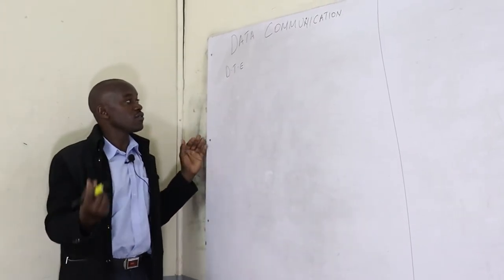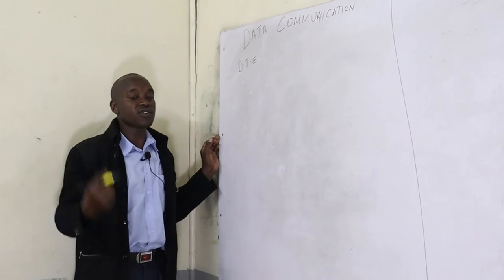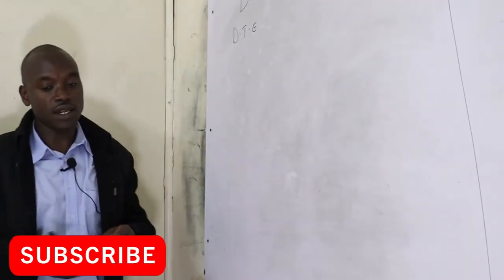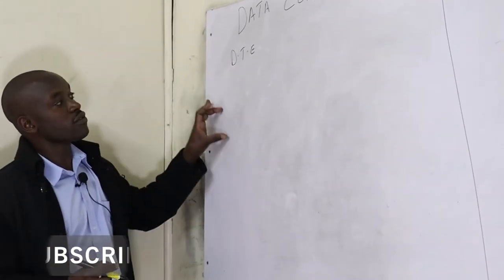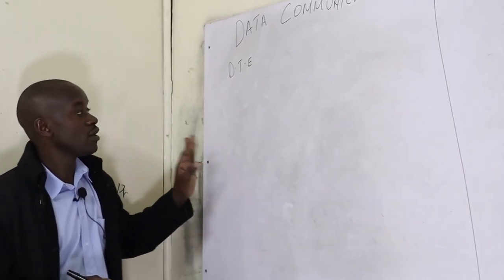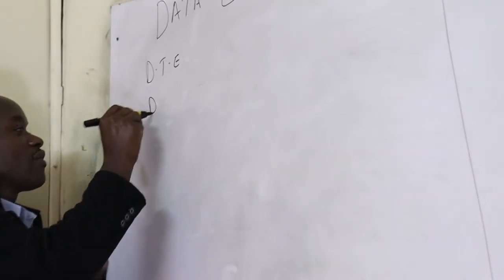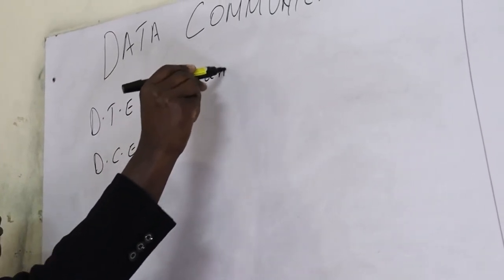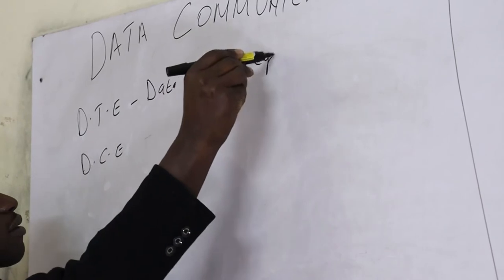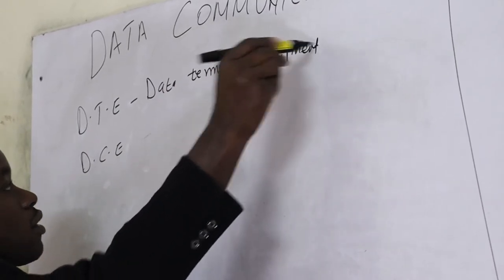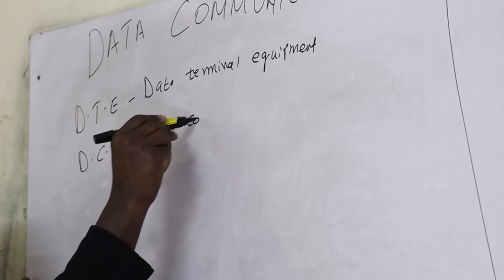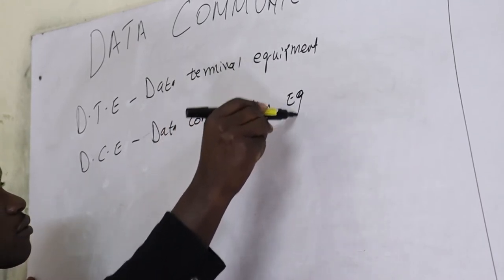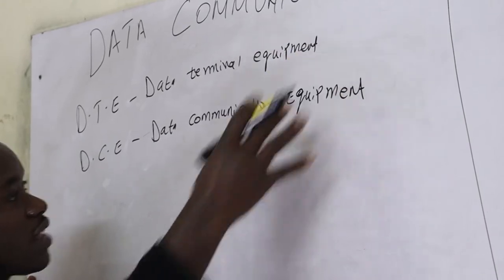The difference between data and information is that information is already processed data — facts which have been put in a format that the recipient can understand and receive. There are some terms we use in data communication. The first is DTE — Data Terminal Equipment — and then we have DCE — Data Communication Equipment.